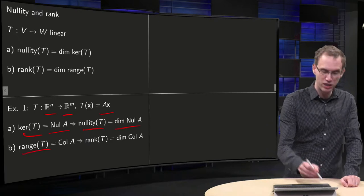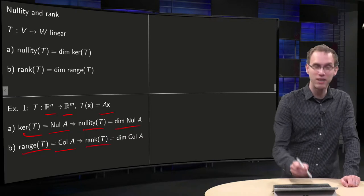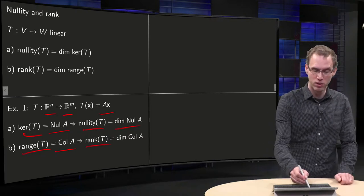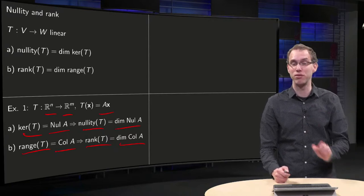And then the range of T, we found that that was the column space of A, so the rank of T is the dimension of the column space of A, and sometimes this dimension of the column space of A is also called the rank of A.